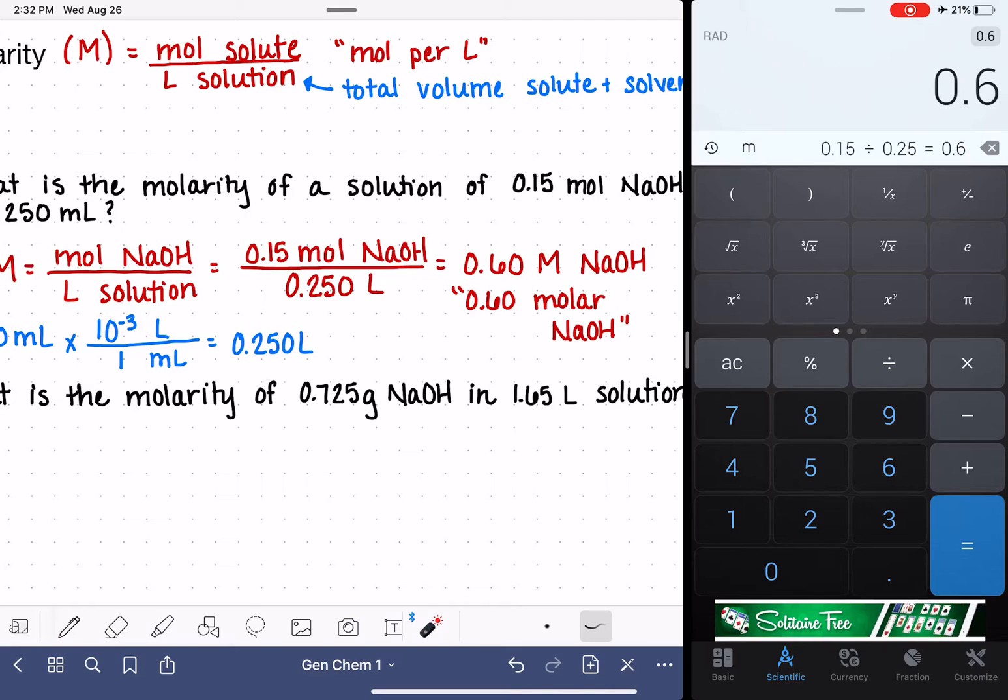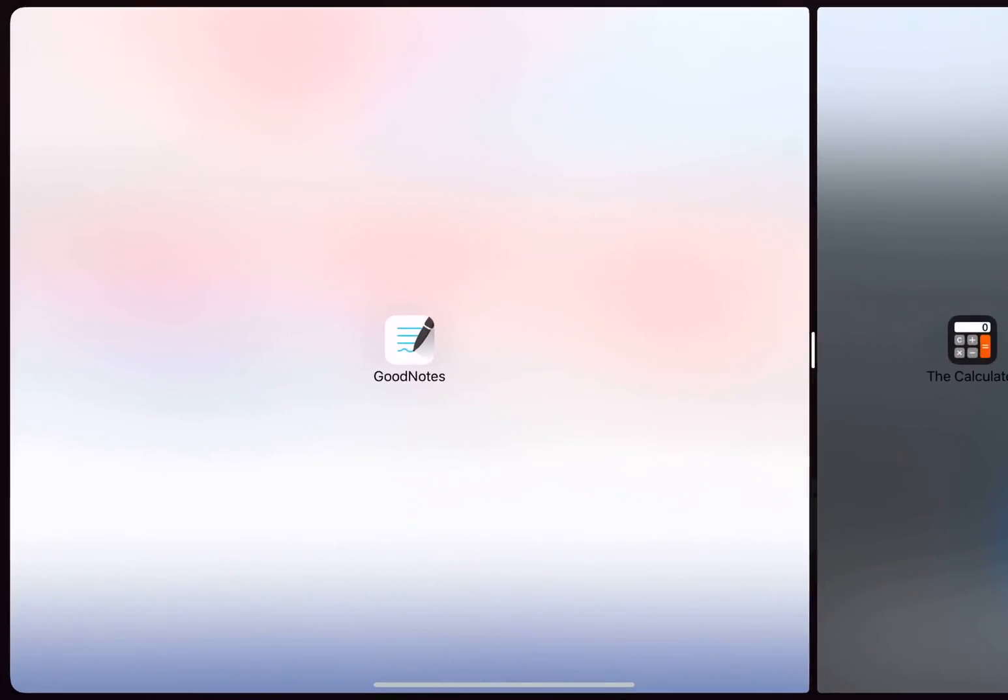So again, the unit is the capital M to indicate molarity, but when we actually say it, when we are to read this, we would say molar and not molarity. Let's look at our second example.